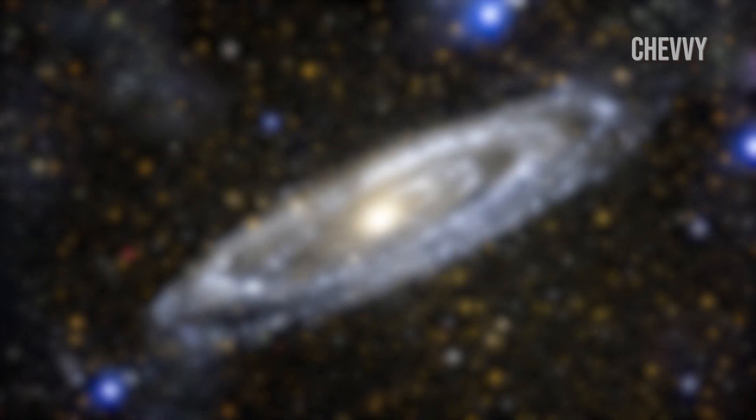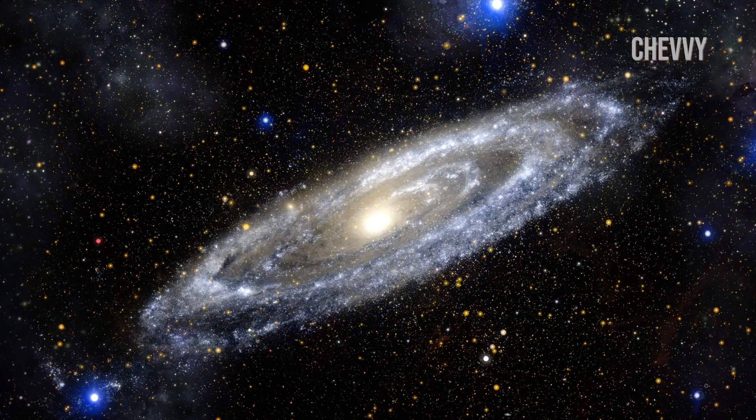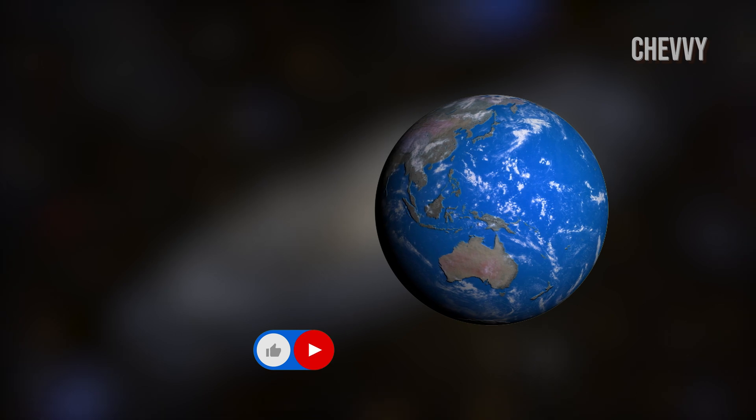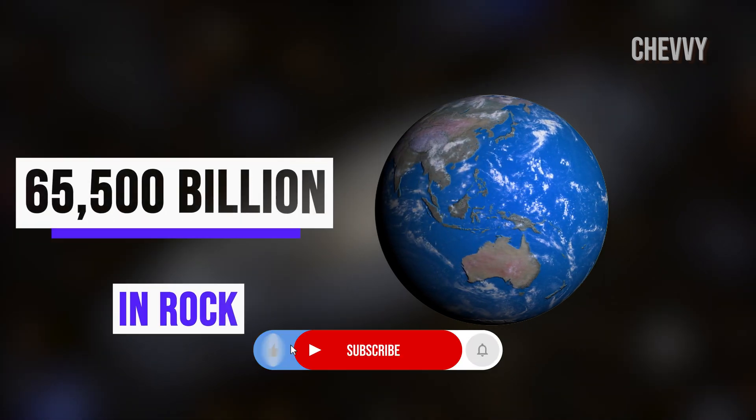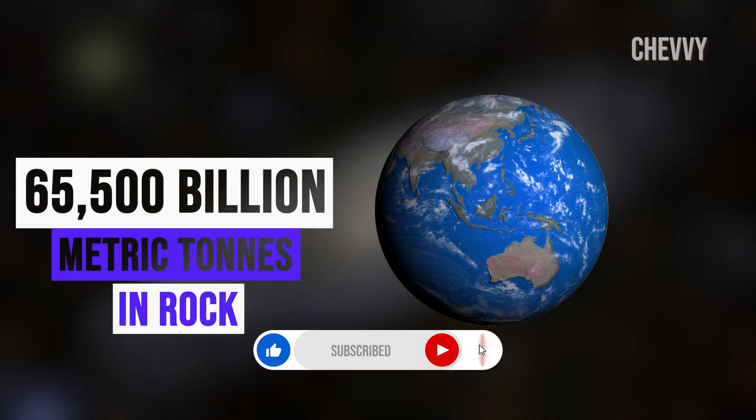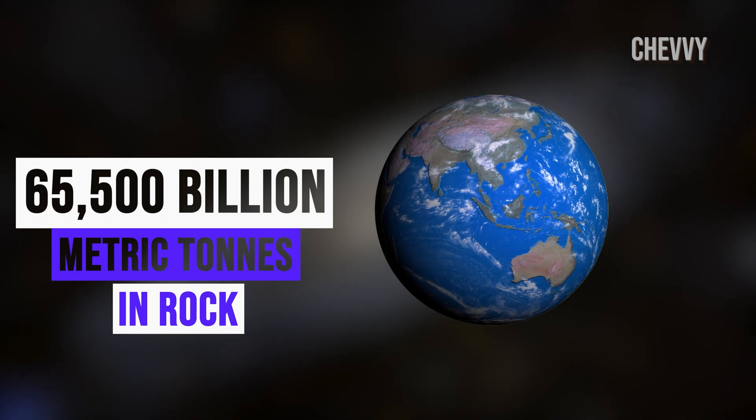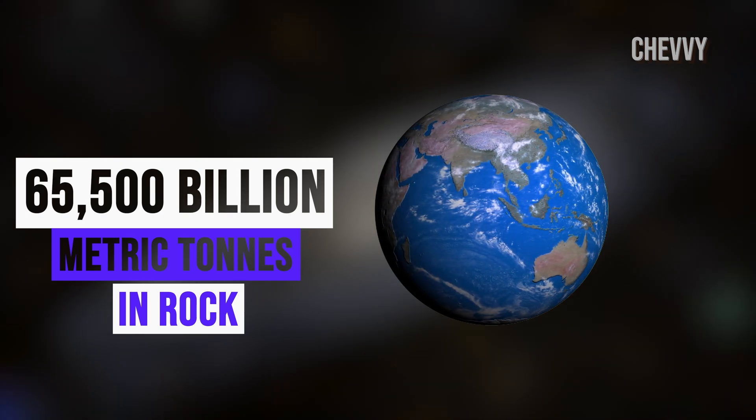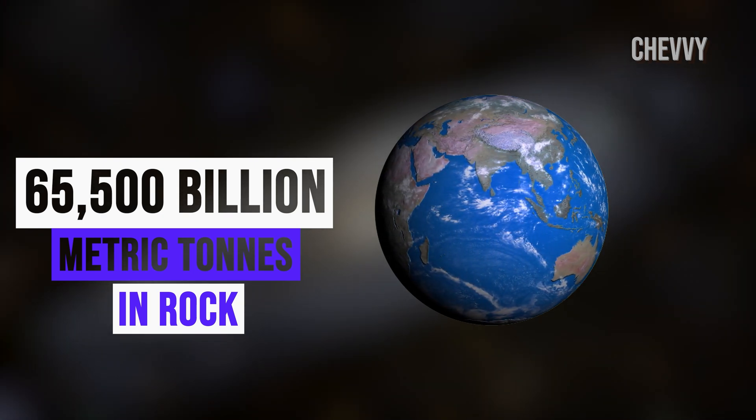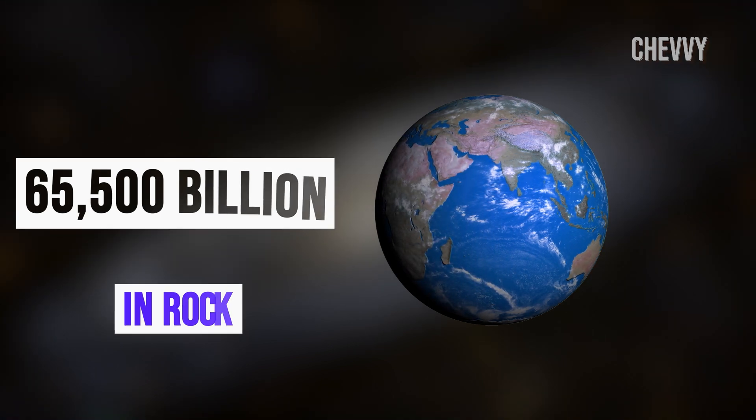The fourth most prevalent element in the universe is carbon. About 65,500 billion metric tons of the earth's carbon are trapped in rocks. The remaining is found in the atmosphere, ocean, plants, soil, and fossil fuels.